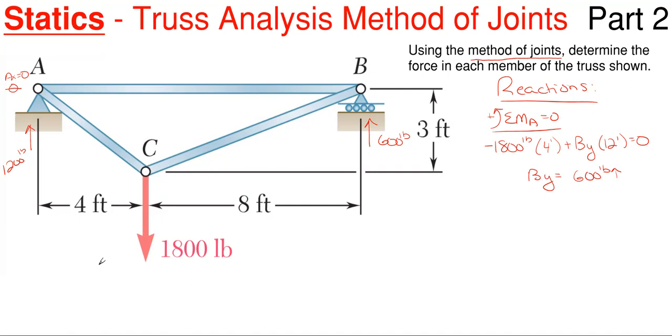All right, so now that I found all my reactions, using the method of joints, I can solve for each of my member forces. So utilizing the method of joints, basically what you're going to do is you are going to look at one joint at a time. So we're going to look at one joint at a time, and we're only going to concern ourselves with what is connecting into that joint or what kind of forces are acting on that joint. We do not care about what else is going on anywhere else in the truss. We only care what's going on at point A.